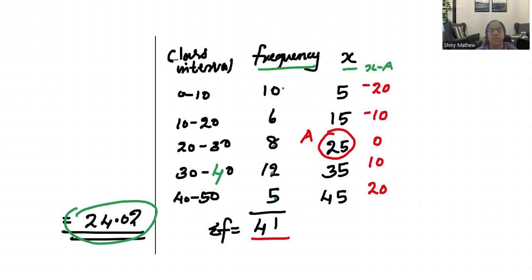In the last class, we learned the shortcut method. We'll use the same question with class intervals 0-10, 10-20, 20-30, 30-40, 40-50. We found the arithmetic mean of 24.02 using direct method and shortcut method. Now we will solve the same question using step deviation method.